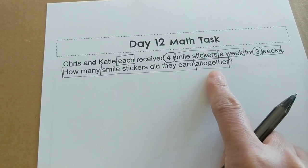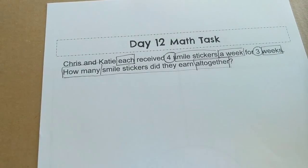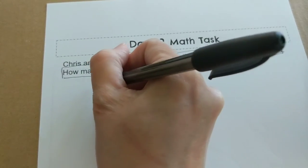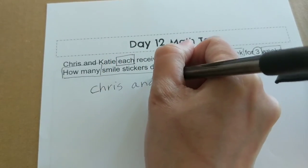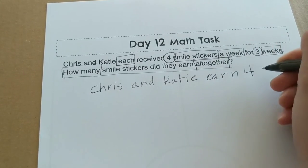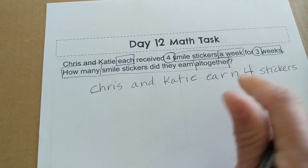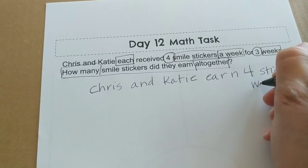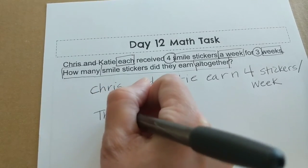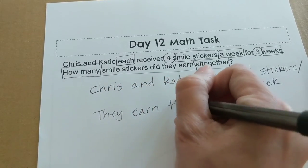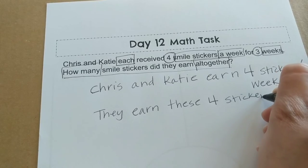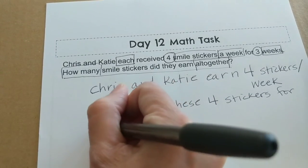A couple more keywords that are important: how many and all together. All together is a word that would tell me to add or multiply. So, if each of them earns four stickers, this is what I know. Chris and Katie earn four stickers per week. And they earn these four stickers for three weeks. They earn these four smile stickers for three weeks.